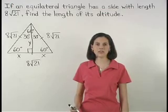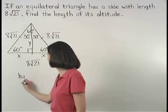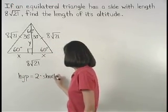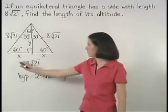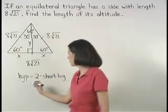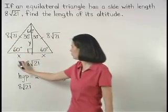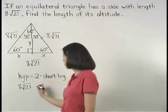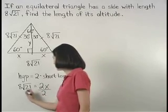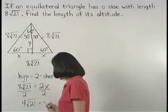Now we know that in a 30, 60, 90 degree triangle, the hypotenuse is two times the short leg. So working with the triangle on the left, the hypotenuse 8 root 21 is two times the short leg, or two times x. And dividing both sides by two, four root 21 equals x.